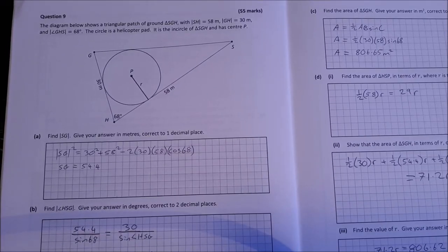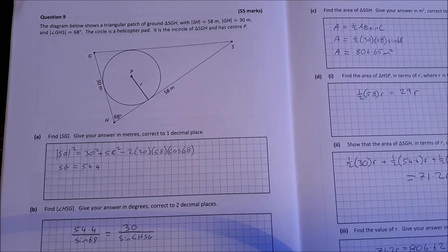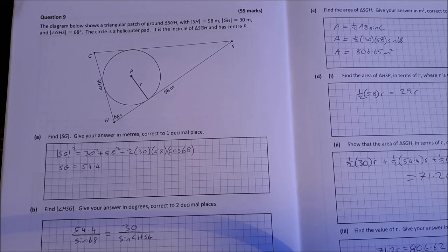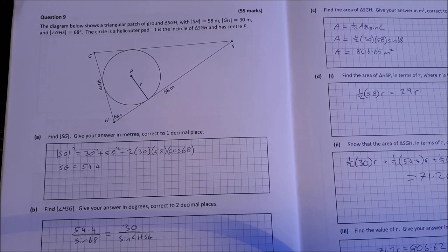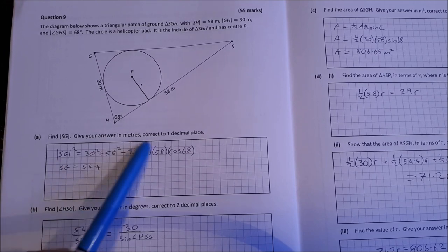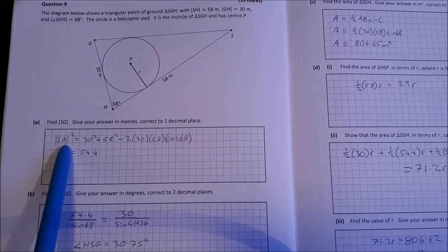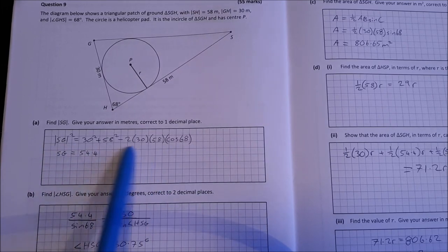Question 9. The diagram below shows a triangular patch of ground, SGH, where SH is 58 meters, GH is 30 meters, and the angle GHS is 68 degrees. The circle is a helicopter pad. It is the in-circle of the triangle SGH. So find SG, give your answer in meters, correct to one decimal place. This is just a cosine rule. So SG squared is equal to this. Fill in everything that you know. So SG is going to be 54.4 meters.